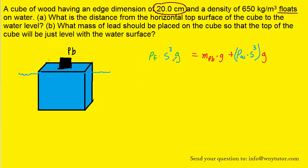Now g appears in all three terms, so it can be divided out. And then to solve for the mass of the lead block, we can subtract this term over to the other side of the equation. And then if you want to get fancy, you can factor out an s cubed.